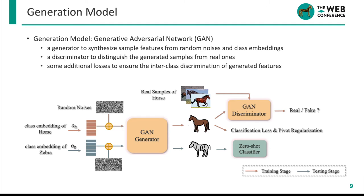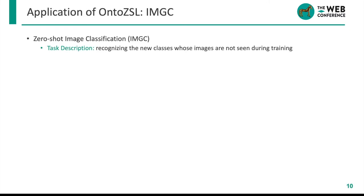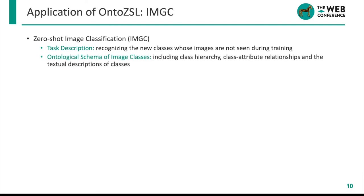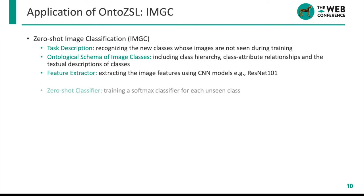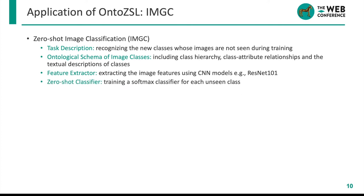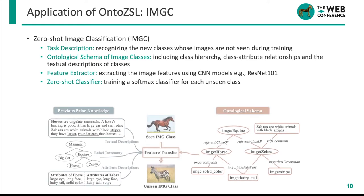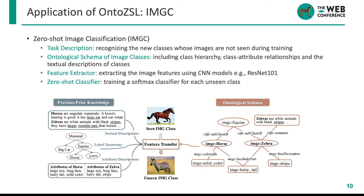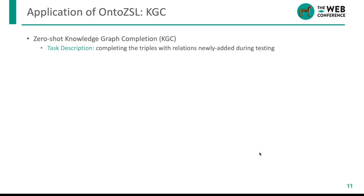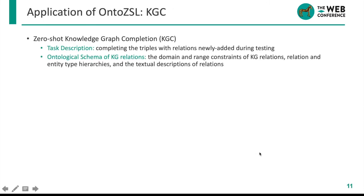We first apply onto-ZSL to zero-shot image classification. Here we use well-known CNN models such as ResNet to extract the sample features of images. With generated unseen image features, we train a typical softmax classifier for each unseen class. Compared with previously used side information, our ontological schema contains more complete semantics — for example, leaf classes have more specific descriptions with attribute nodes, while attributes in different classes have more global constraints from class-level semantics.